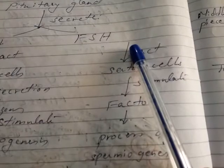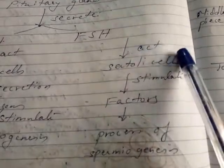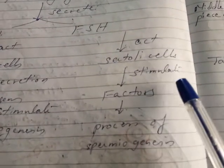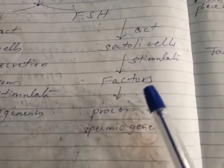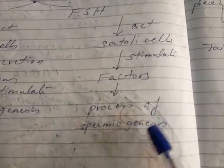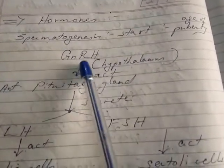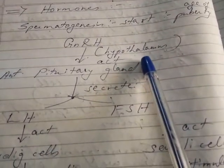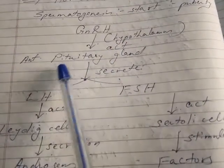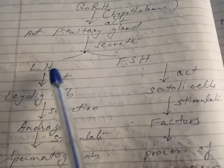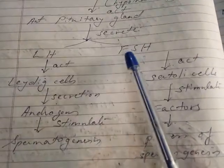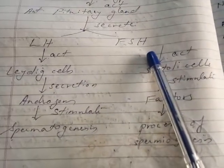Follicle stimulating hormone acts on Sertoli cells, stimulating them to secrete certain factors that help in the process of spermiogenesis. So the hormones secreted are: GnRH from the hypothalamus, acting on the anterior pituitary gland, which releases luteinizing hormone and follicle stimulating hormone.